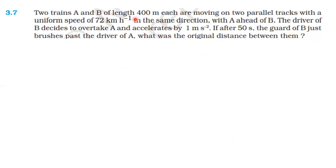Two trains A and B of length 400 meters each are moving on two parallel tracks with a uniform speed of 72 km per hour in the same direction, with A ahead of B. The driver of B decides to overtake A and accelerates B by 1 meter per second squared. After 50 seconds, the guard of B just brushes past the driver of A. What was the original distance between them?